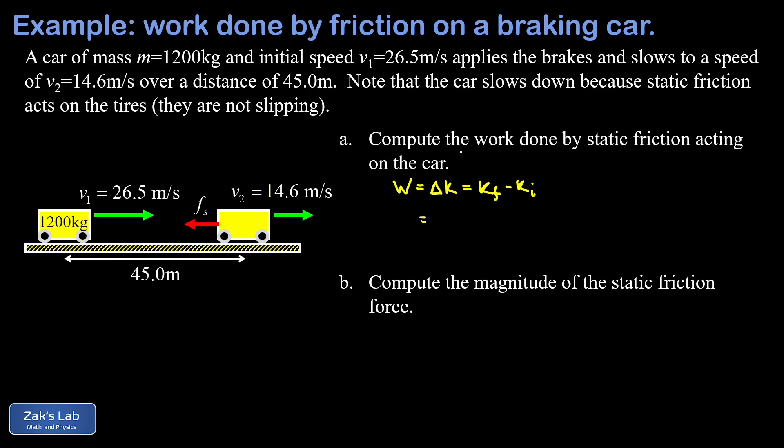We plug in our final and initial kinetic energies: one half mv2 squared minus one half mv1 squared. We can factor the one half m out of this to clean it up a little, so I get one half m times the quantity v2 squared minus v1 squared.